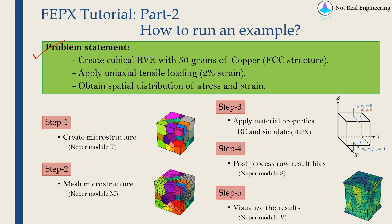This is the problem statement. We are going to create a cubical RVE with 50 grains of copper — copper means FCC structure. Then we will apply a uniaxial tensile loading with 2% strain, and finally obtain the spatial distribution of stress and strain, and also we will get a stress-strain graph.